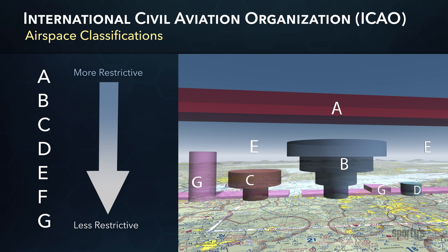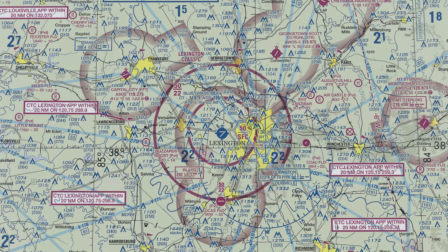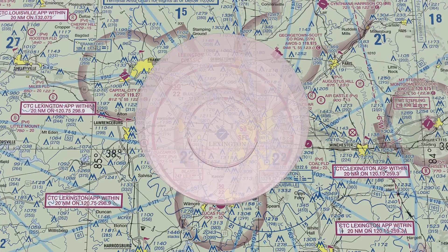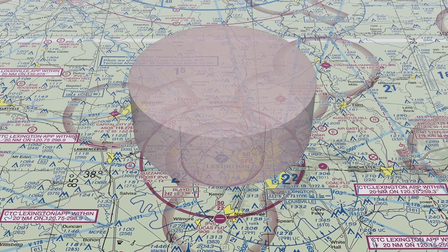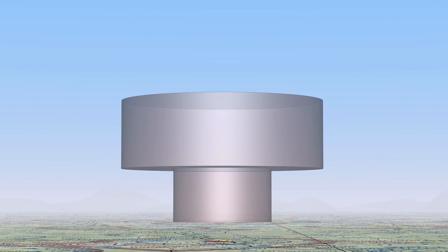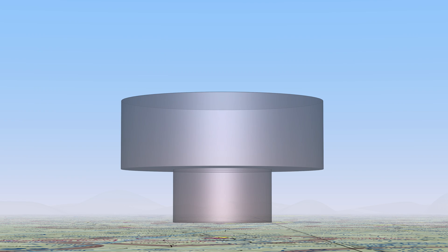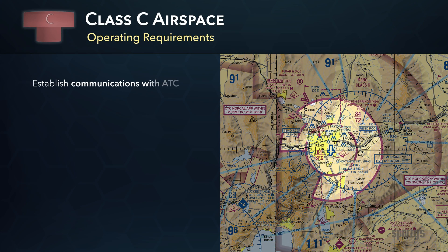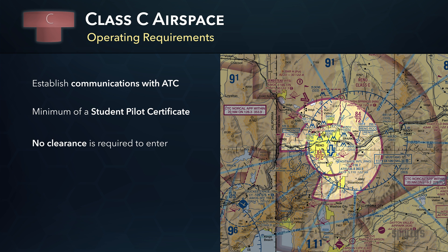Class C airspace surrounds airports handling a moderate volume of air traffic and resembles a two-layer upside-down wedding cake in shape. It typically extends 4,000 feet above the surface. To operate in Class C, you'll need to establish communications with ATC and hold at least a student pilot certificate. Note that no clearance is required to enter Class C, just establishment of communications. This can be as simple as the controller acknowledging your call sign.